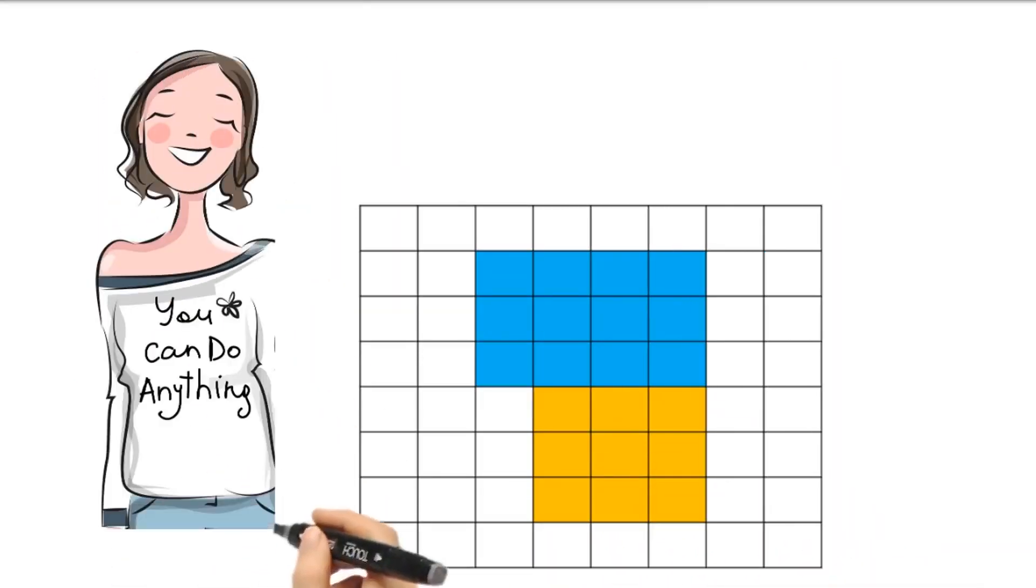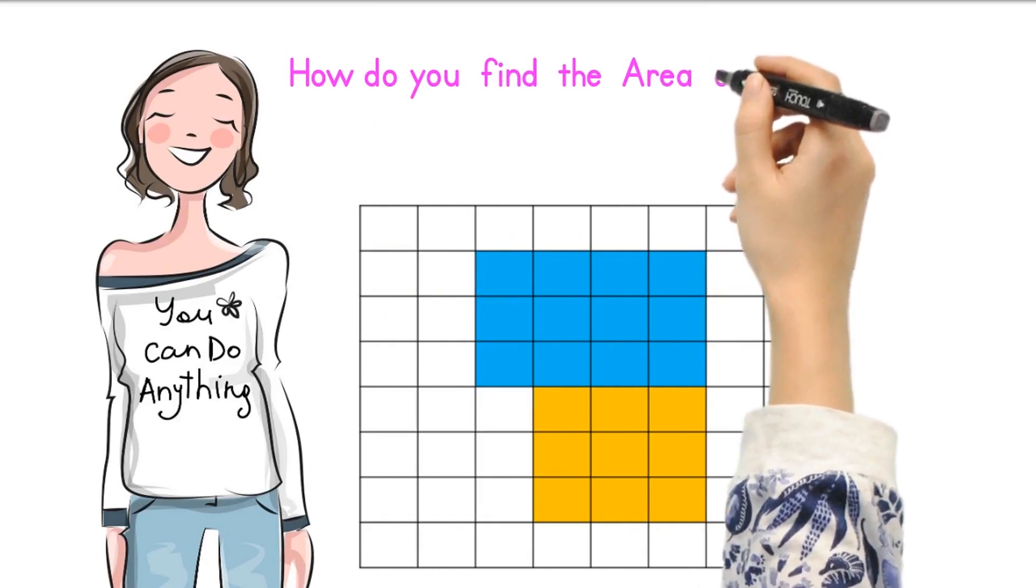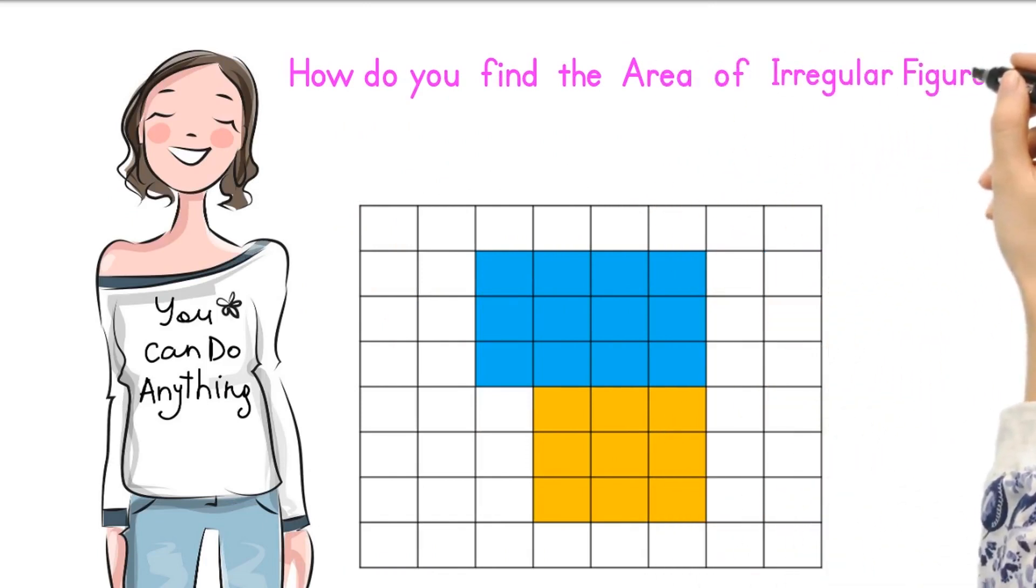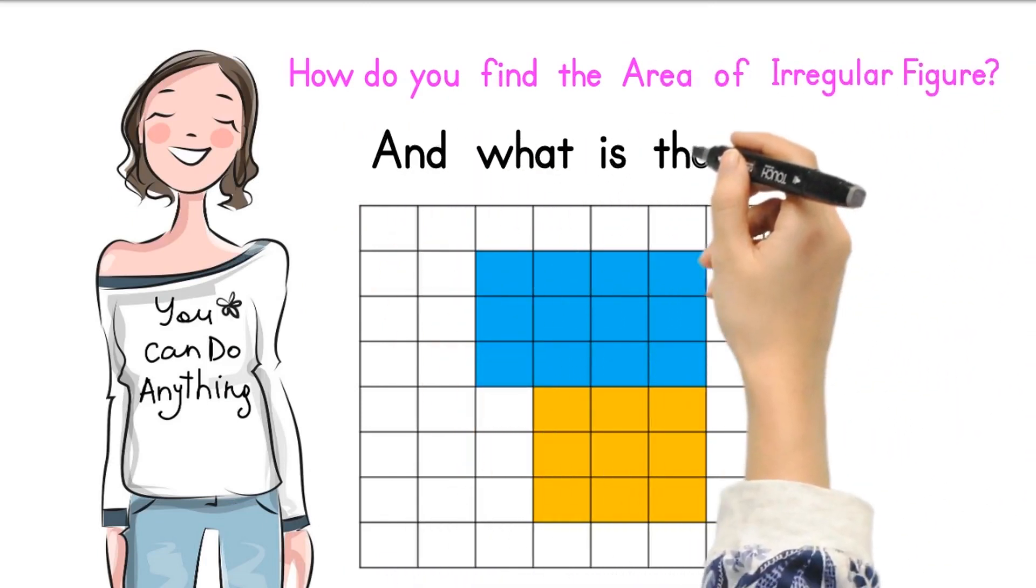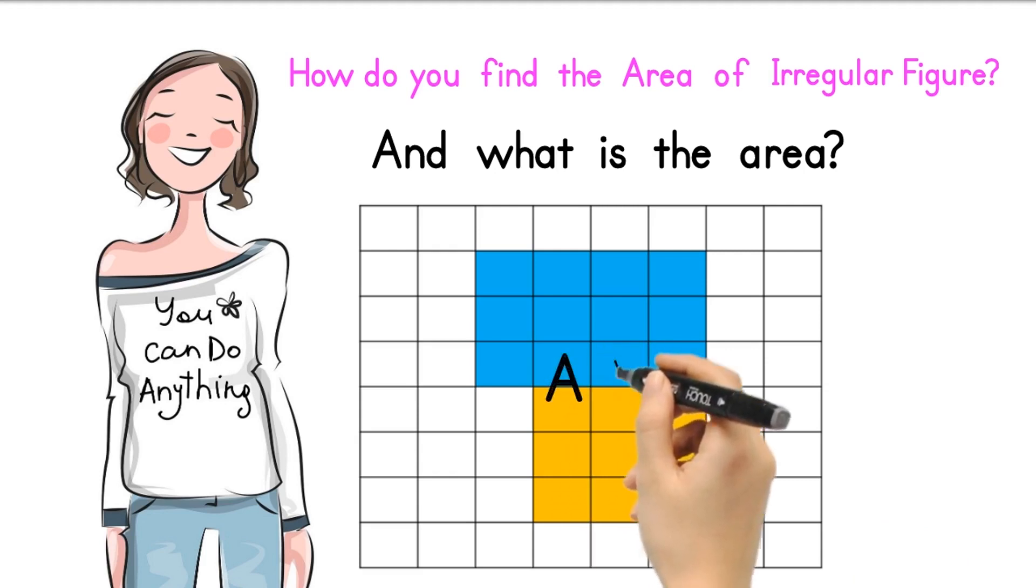Do you think it is hard to find the area of the irregular figure? How do you find the area of a regular figure? And what is the area? Yes, very good. The answer is 21 square units.